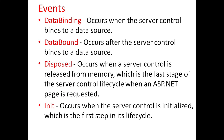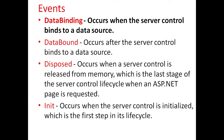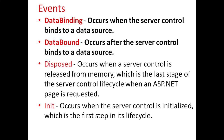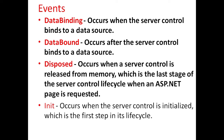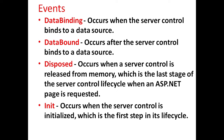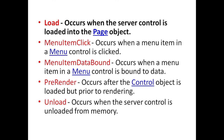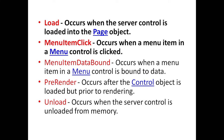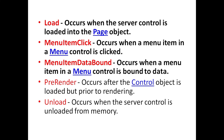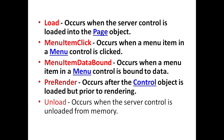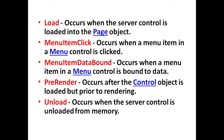Different events for menu items are: Data binding, which occurs when the server control binds to a data source. Data bound event occurs after the server control binds to a data source. Disposed event occurs when a server control is released from memory, which is the last stage of the server control lifecycle. Init event occurs when the server control is initialized, which is the first step in the lifecycle. Load event occurs when the server control is loaded into the page object. Menu item click event occurs when a menu item in a menu control is clicked. Menu item data bound event occurs when a menu item in a menu control is bound to data. Pre-render occurs after the control object is loaded but prior to rendering. And unload event occurs when the server control is unloaded from memory.